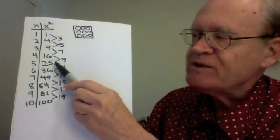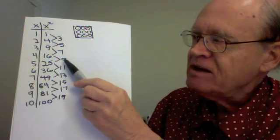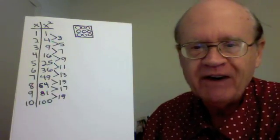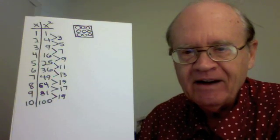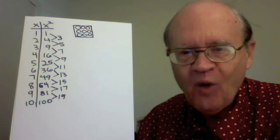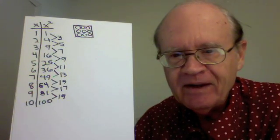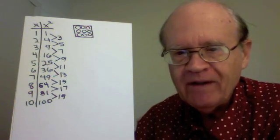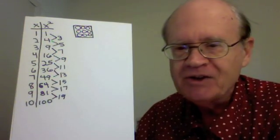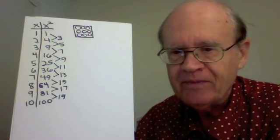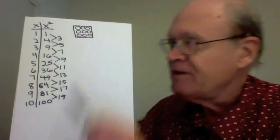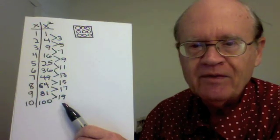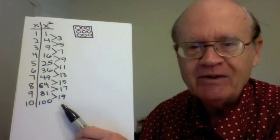We subtract numbers in the X squared column to get the differences. We add numbers in the X column to get the very same differences. And now, why is all this true? And here's your big challenge in this video. Can you make up a geometric interpretation, that is an interpretation of geometry, to explain the facts about these numbers?